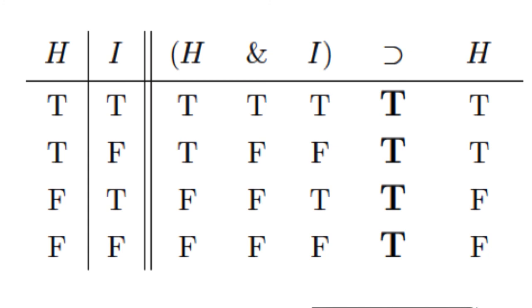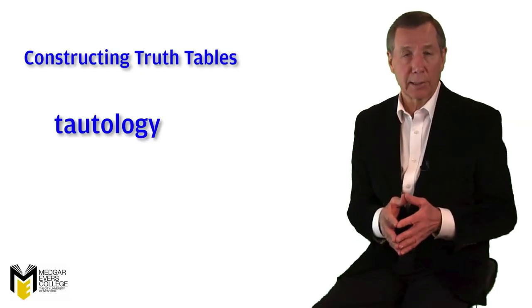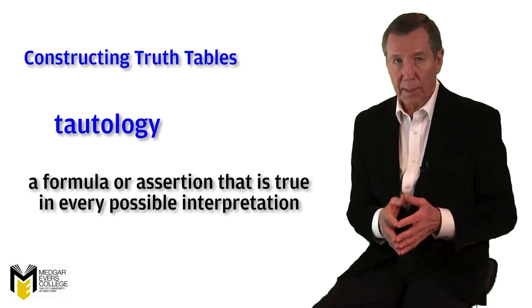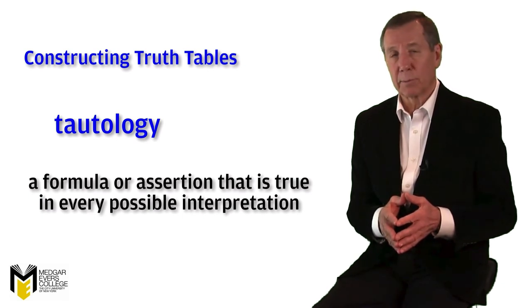Now this is very interesting. As you can see, the sentence if H and I, then H is true for all possible combinations of truth values and therefore for all possible substitution instances. It doesn't matter what letters we use or what the letters mean. Whatever they mean, any possible set of sentence variables that are expressed in the form of if H and I, then H will always be true. That's what we call a tautology in logic, a formula or assertion that is true in every possible interpretation.